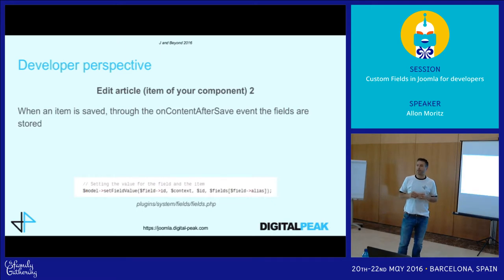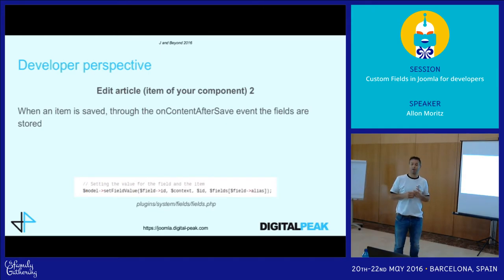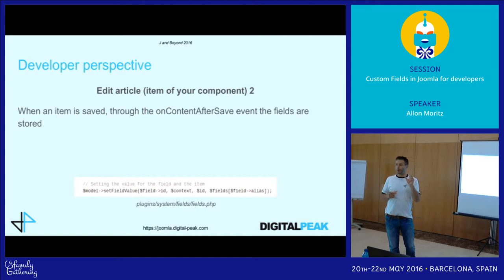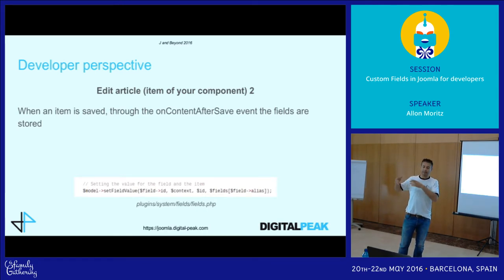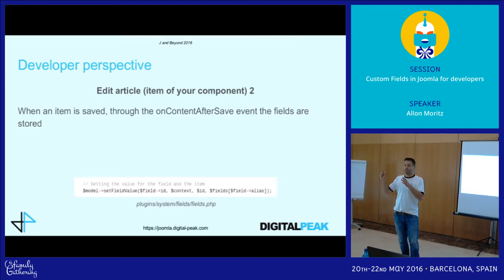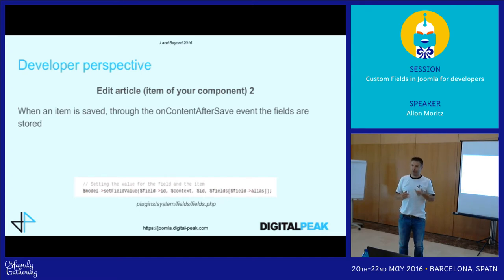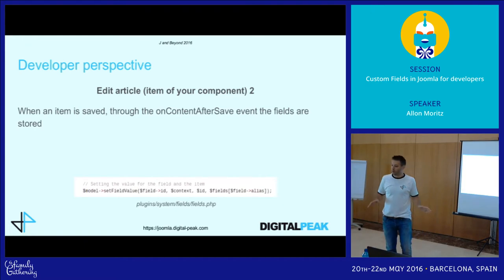A short explanation of the database structure. Com_fields uses only two tables. One table contains the fields themselves — all the settings like access, publish down, publish up, title, and so on. The second table stores the relation: it has the context, the field ID, the ID of the article, and the value. No more tables — it's a very simple data structure.